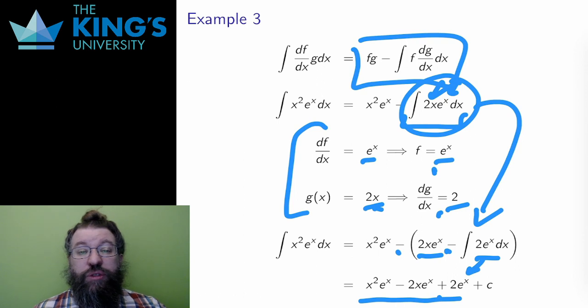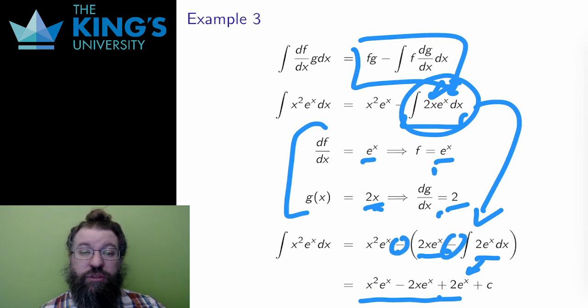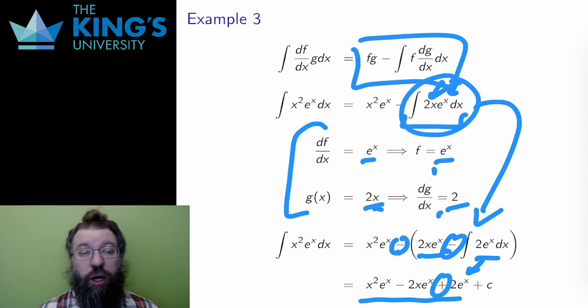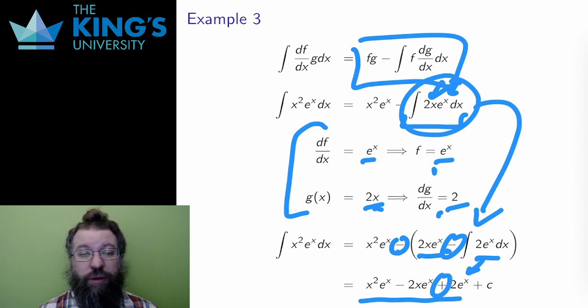Note that there are two negatives for the last term — the negative outside the bracket and the negative inside — which makes this term positive. Sign errors are pretty easy to make with integration by parts, so do be careful to keep track of the plus and minus signs.